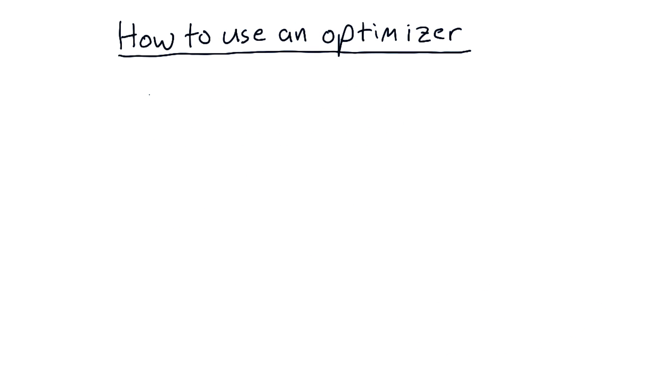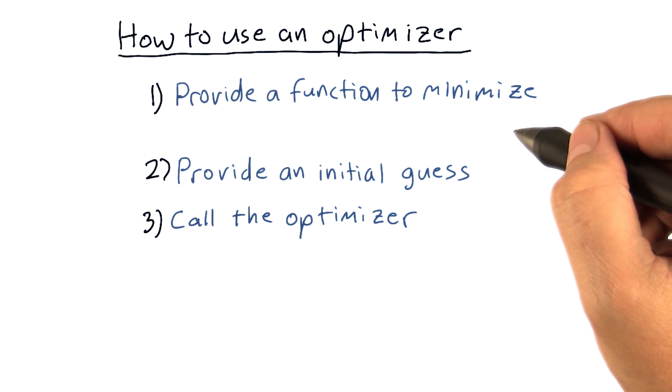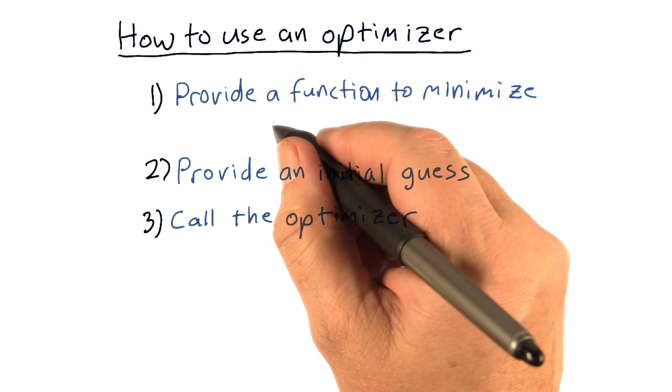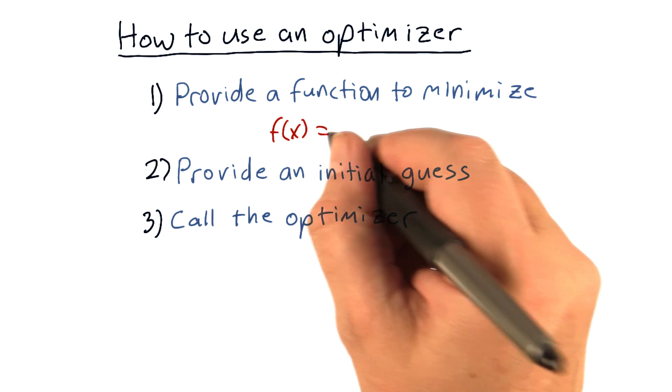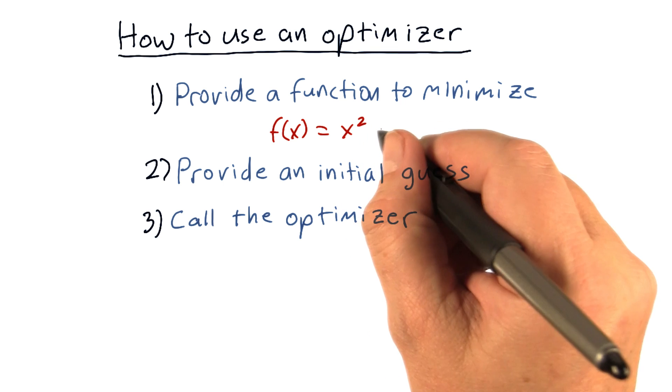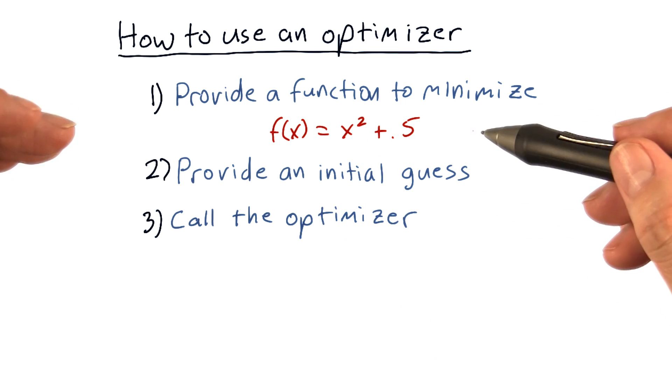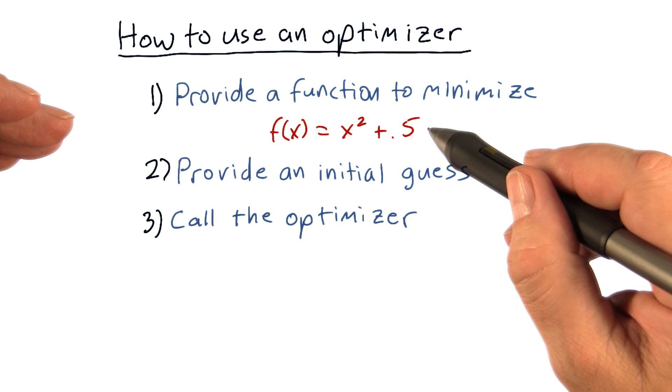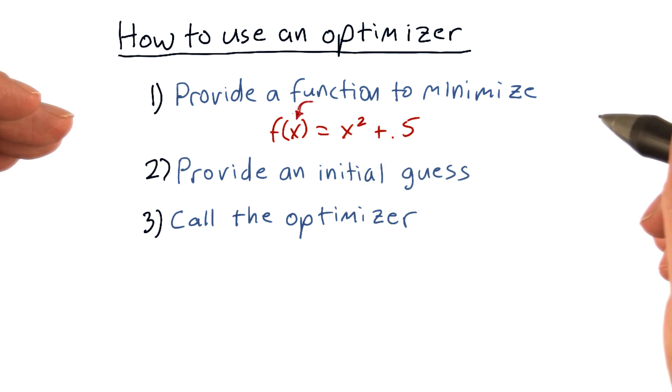How do we use an optimizer? It's really just as simple as three key steps. First thing you need to do is define a function that you want to minimize. As an example, you might use something like f(x) = x² + 0.5. You define that in Python, and then the minimizer will call this function many times as it tries to find the minimum value for x that causes this function overall to be smallest.